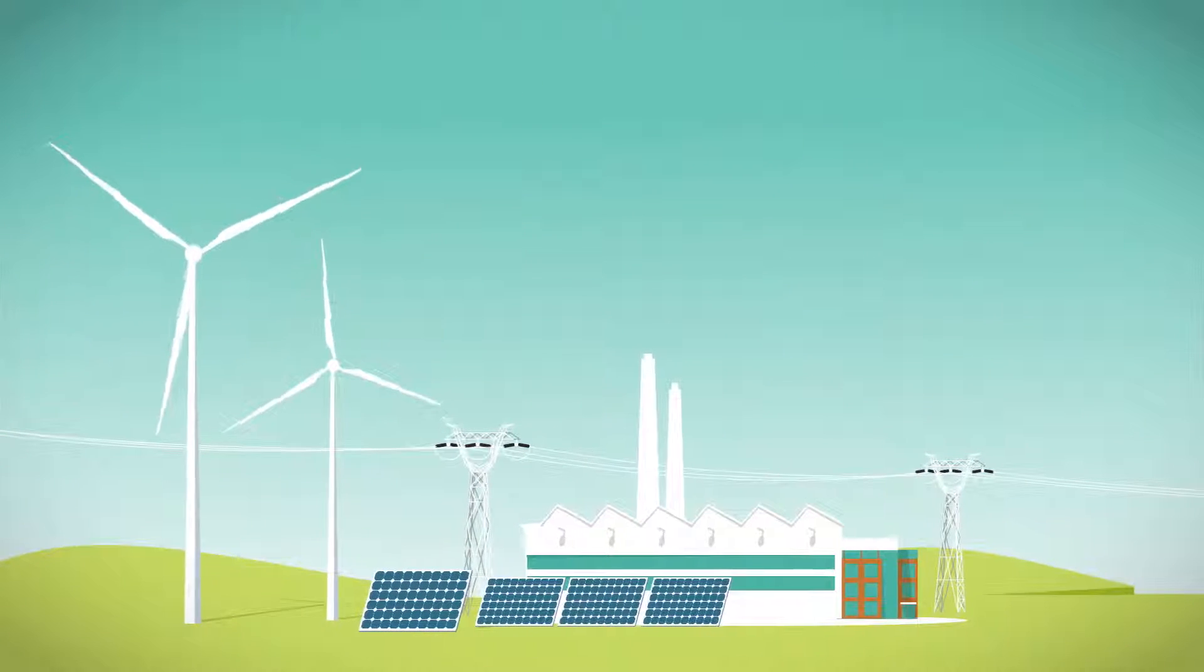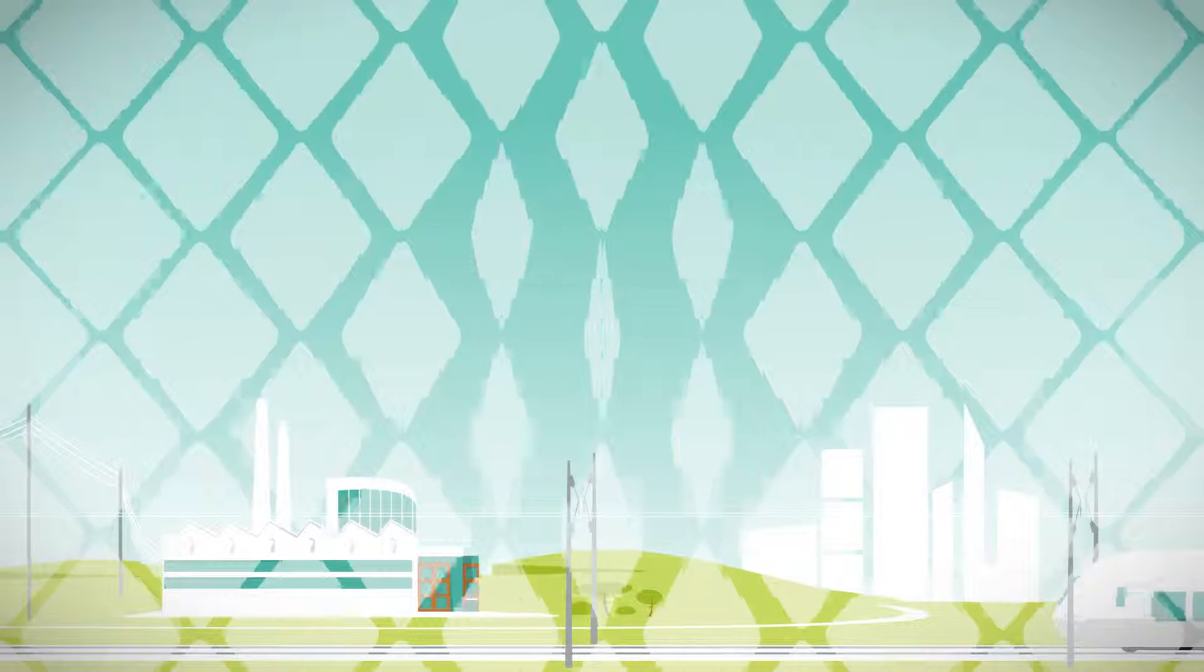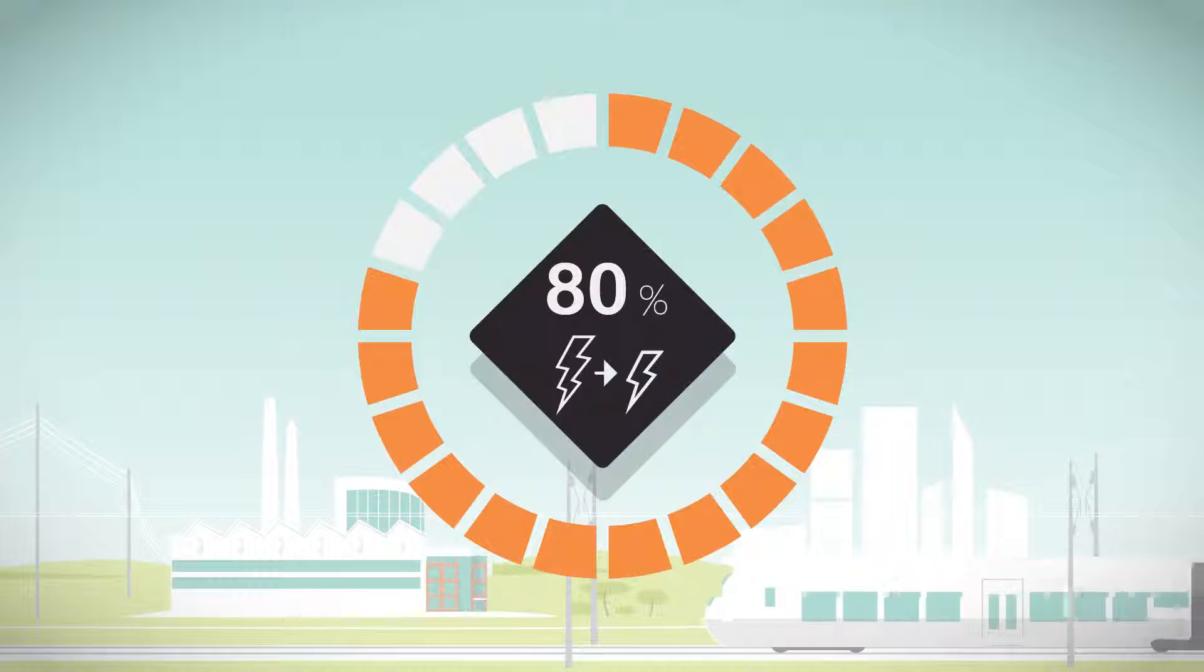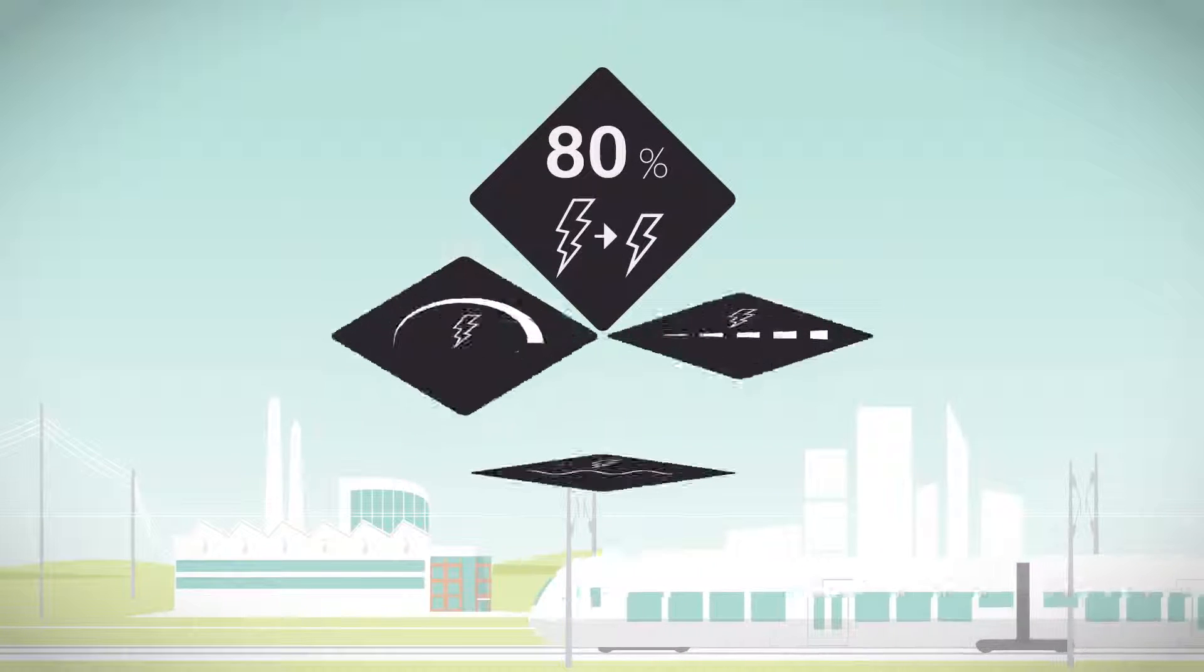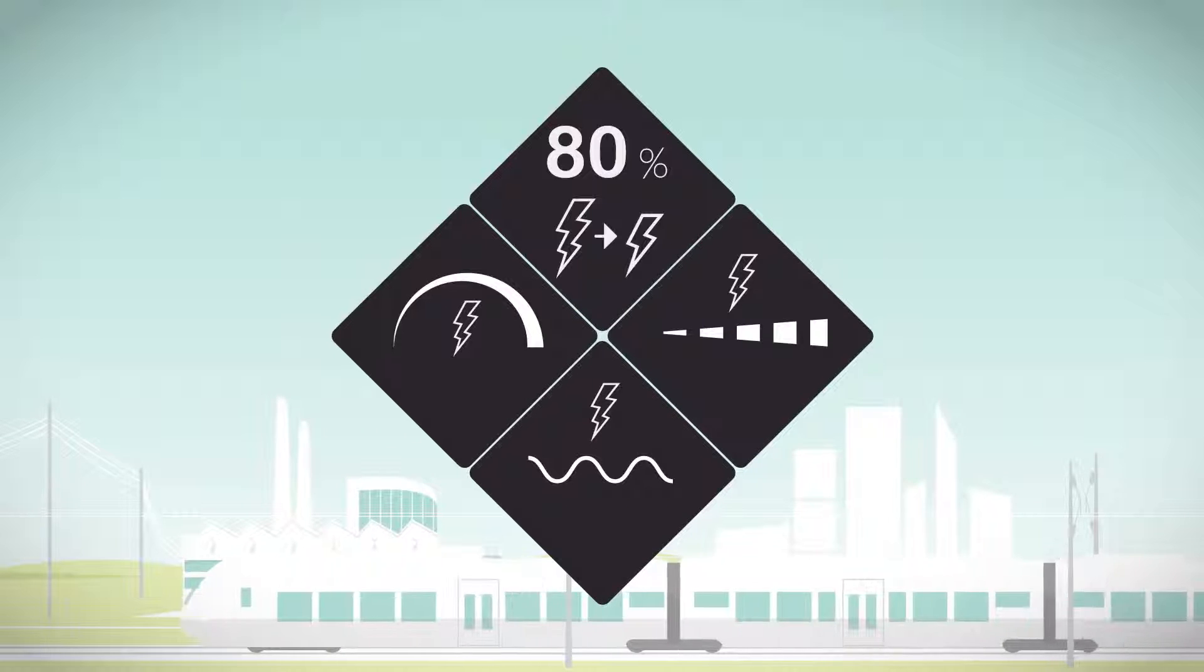Today, for ensuring transport, management and distribution of power, over 80% of electrical power generated is converted. This means it is made compatible with its required use by transforming its current, voltage or frequency using semiconductors placed inside converters.